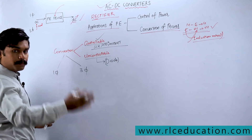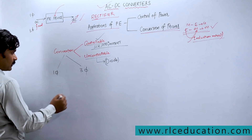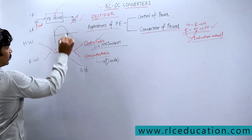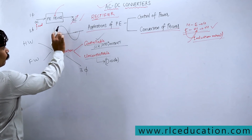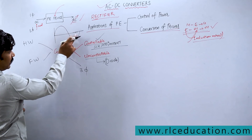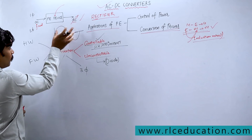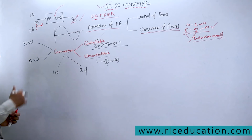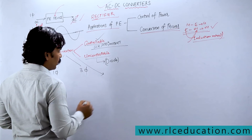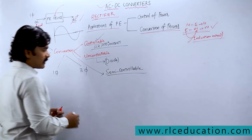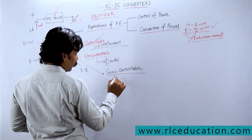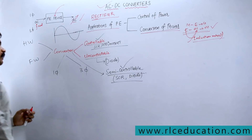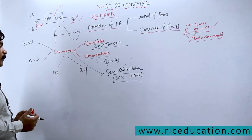Apart from fully controllable and uncontrollable, there is a hybrid model called a semi-controlled converter, which uses both controllable and uncontrollable switches — for example, a combination of SCRs and diodes. We have to study all these types based on controllability. Another classification depends on the load connected to the converter.